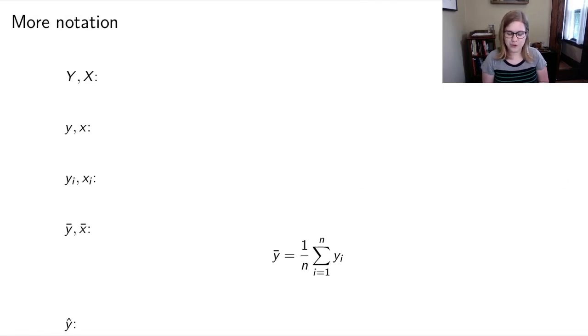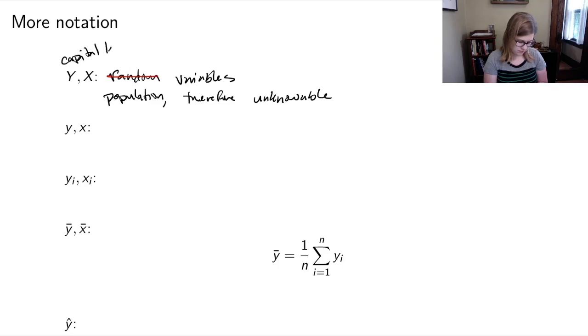So let's do a little more notation. If we are thinking about these Y's and X's in that function notation, the capital Y and capital X, those are variables. You could think of them as random variables. We're not going to spend a lot of time thinking about this sort of random part of it. They're variables, but they're about the population, therefore unknowable. And we use capital letters to denote that. If we have the lowercase y and x, these are observed data from the sample. So that's our actually known variables. And then we use the i subscript notation to denote a particular observation.